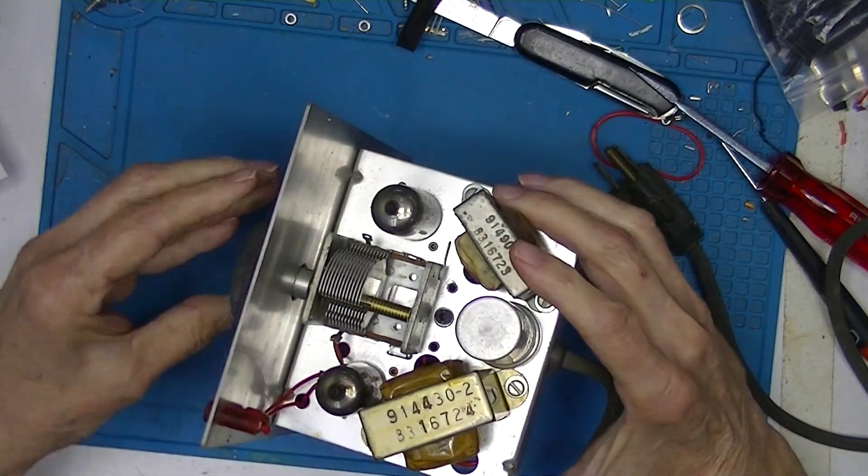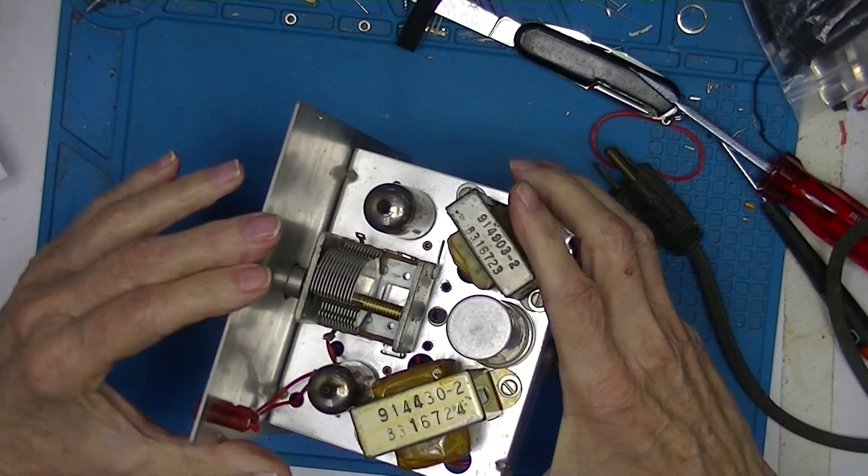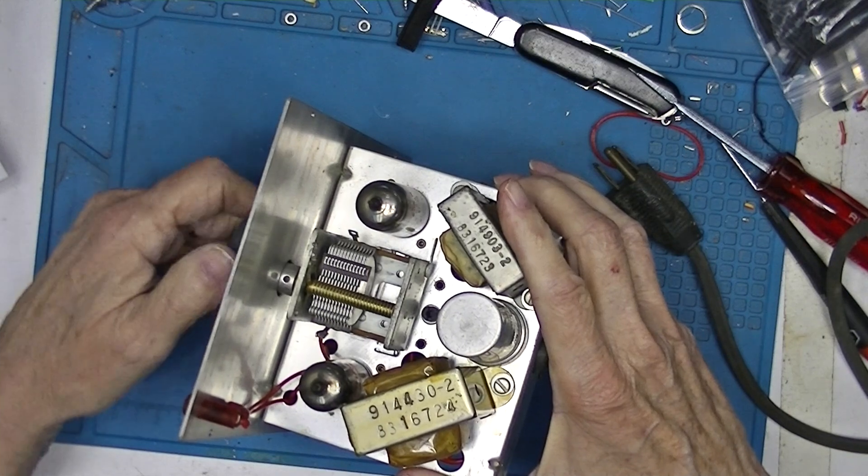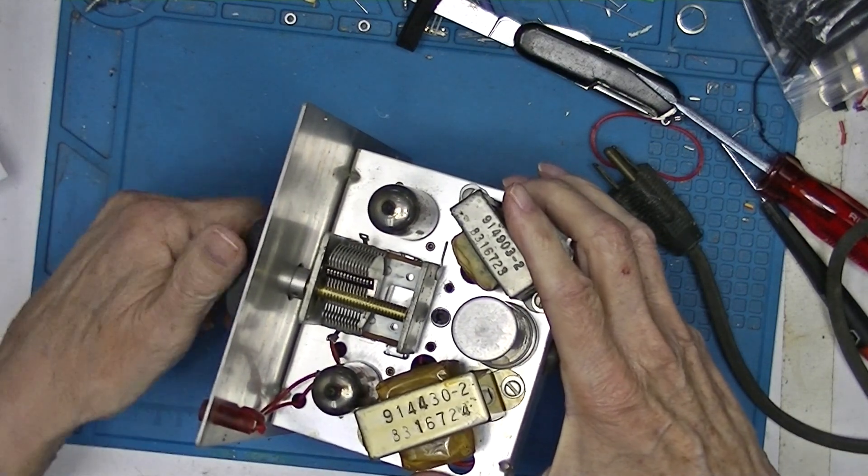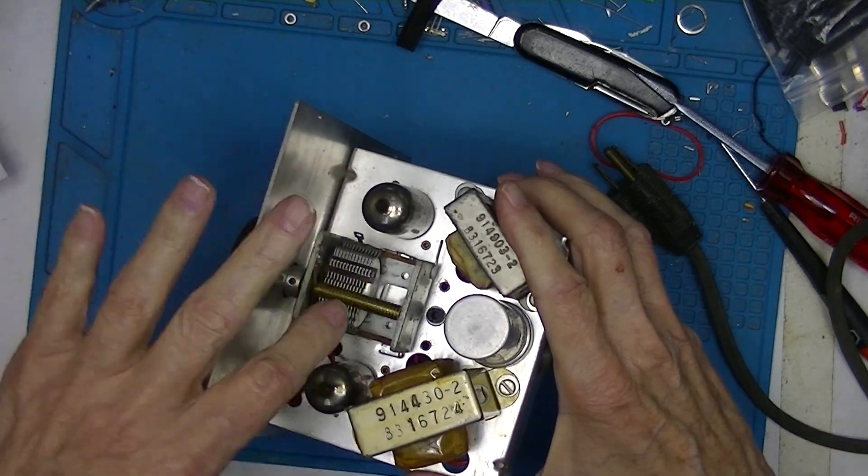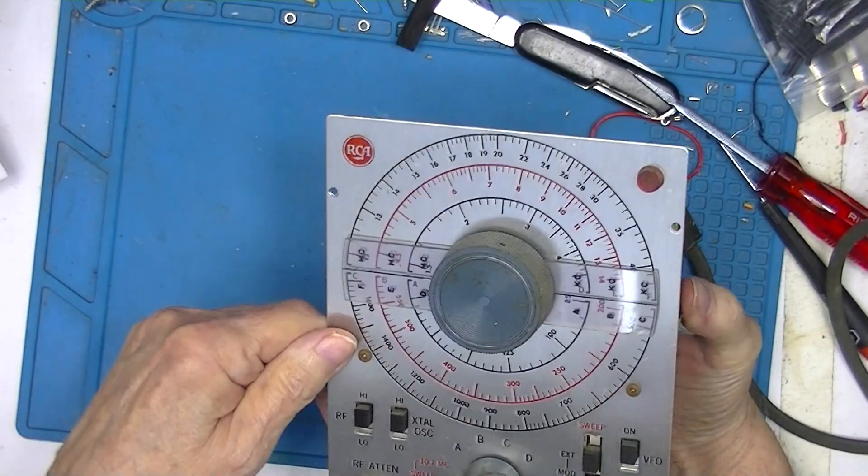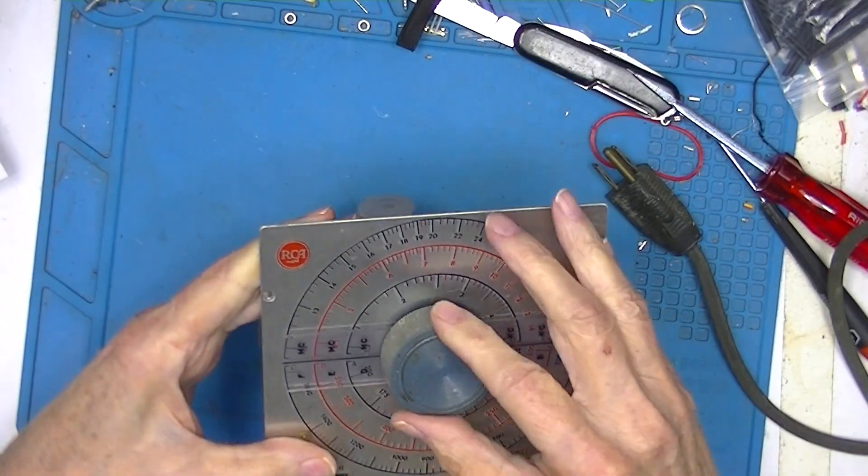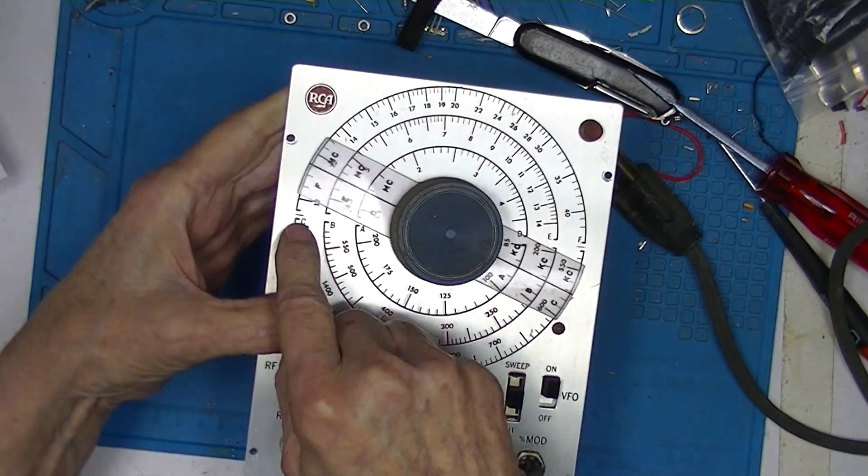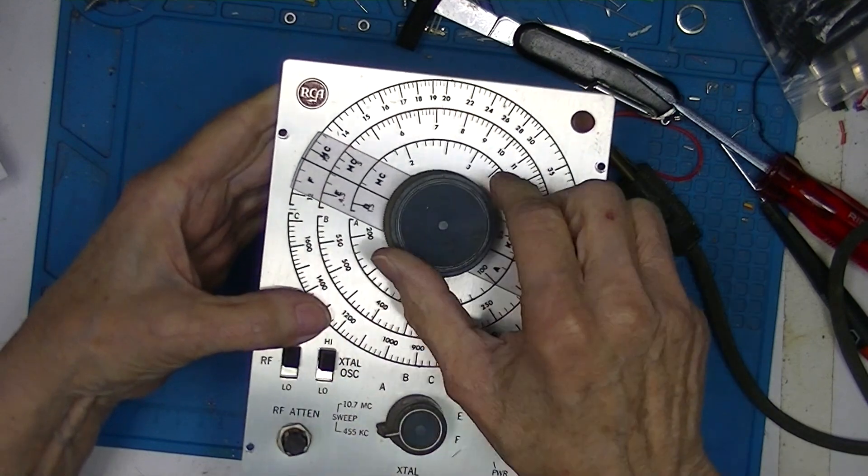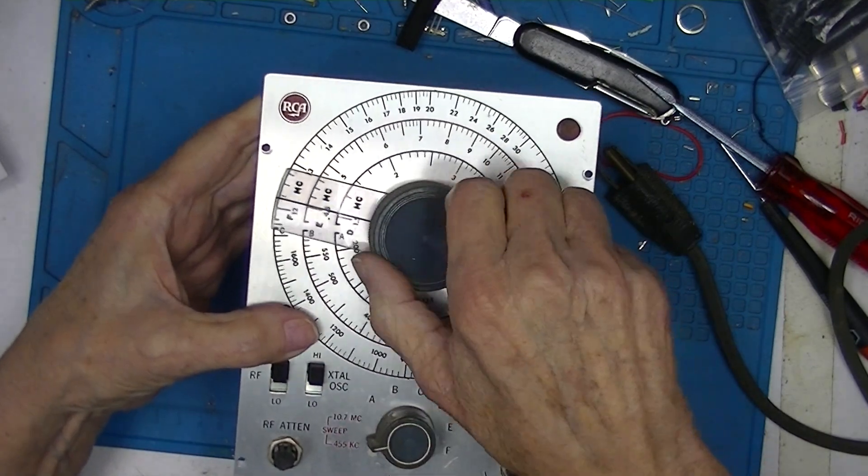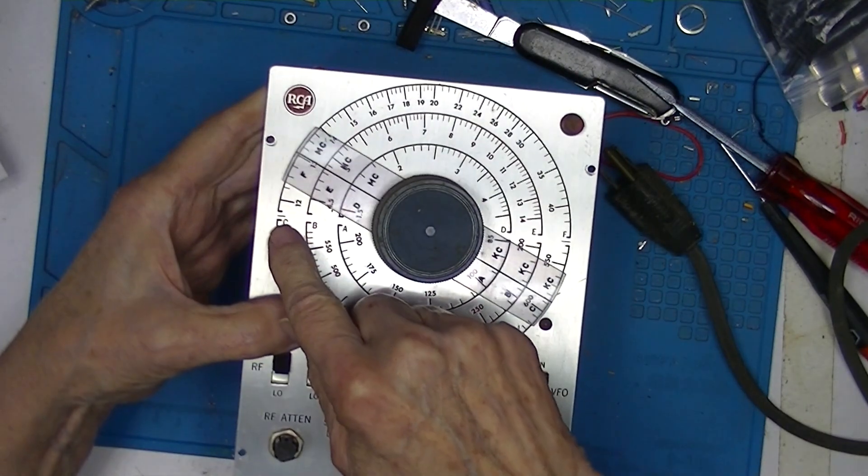And it's set fully this way. There's a line between these stops. This cursor should line up with this little dash whenever the capacitor is fully meshed.